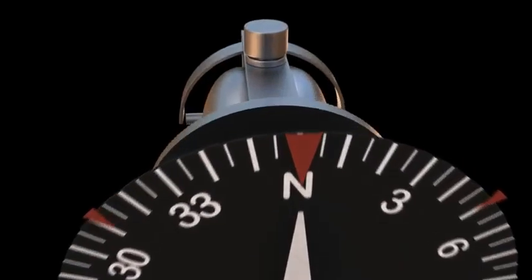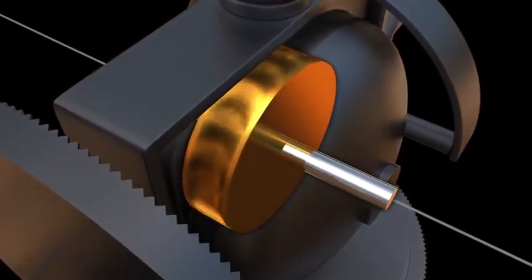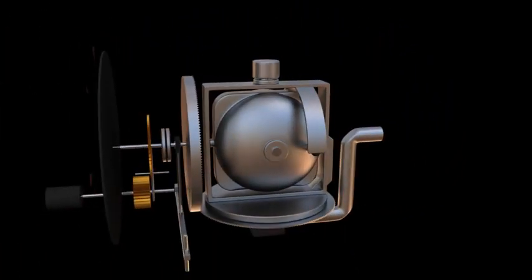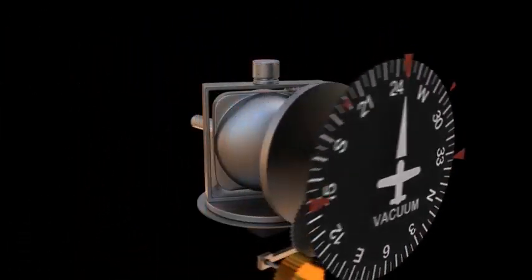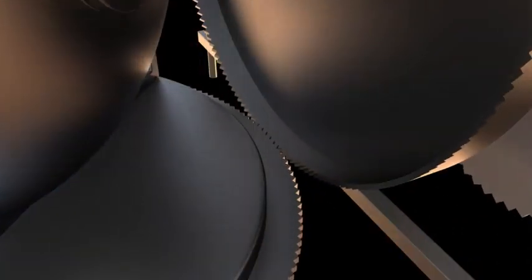Unlike the attitude indicator, the heading indicator is orientated so that only the horizontal axis is used to drive the display. When the aircraft turns, the gyro and attached main drive gear remain in their original orientation. This then causes the main drive gear to rotate the compass card gear, which then rotates the compass card on the face of the instrument.